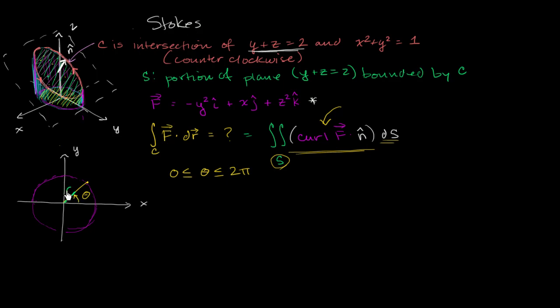So for any given r, if we keep changing theta, we would essentially sweep out a circle of that radius. And if you change radius a little bit more, you'll sweep out another circle. And if you vary radius between 0 and 1, you'll get all of the circles that will fill out this entire area.